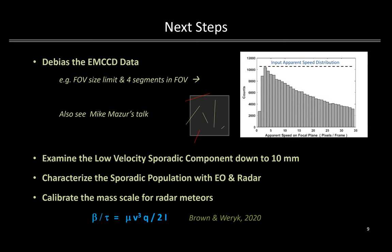This is one of many biases that need to be removed to fully understand the low velocity sporadic meteor distribution. With the data now in hand, studies on the sporadic population in EO and radar, and a more definitive estimate of the mass scale for radars, will be obtained.